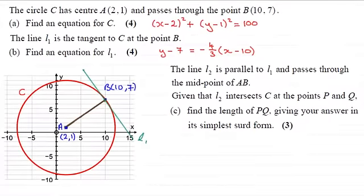Hi there. Now, in this last part of the question, we're told that the line L2 is parallel to L1 and passes through the midpoint of AB. Given that L2 intersects C at the points P and Q, we've got to find the length of PQ. Give your answer in its simplest surd form for three marks.